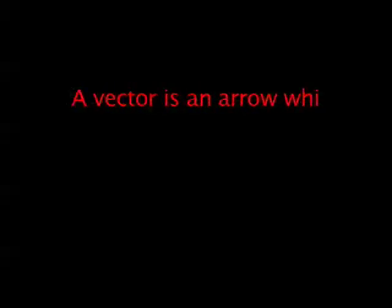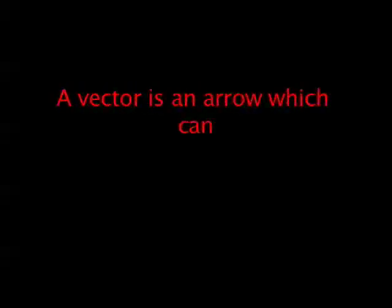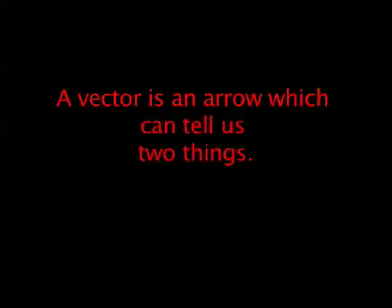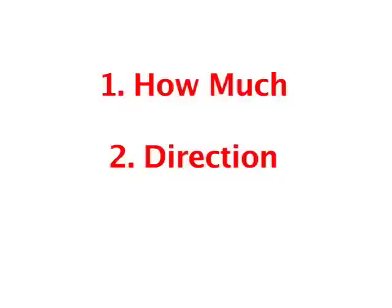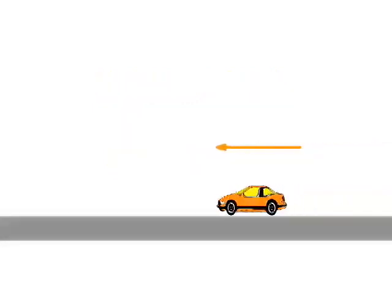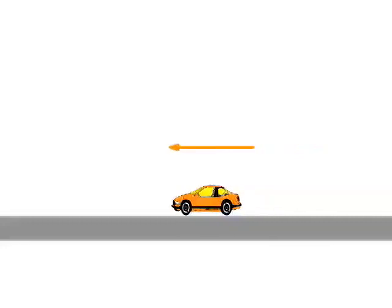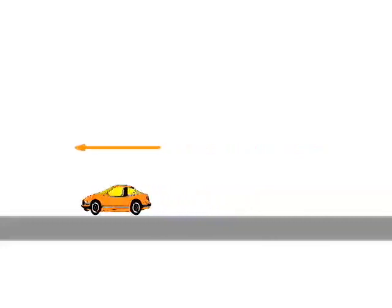A vector is an arrow which can tell us two things: how much and direction. The technical term for how much is called magnitude. This vector tells us the direction the car is traveling. The length of the vector tells us how fast the car is traveling.